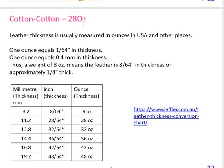To understand Cotton Cotton 28 oz: leather thickness is usually measured in ounces in the USA and other places, where 1 ounce equals 1/64 inch in thickness, or 0.4 mm. So a belt of 8 oz has 3.2 mm thickness, and a belt of 36 oz has 14.4 mm thickness. This thickness may vary according to the manufacturer and the properties required.